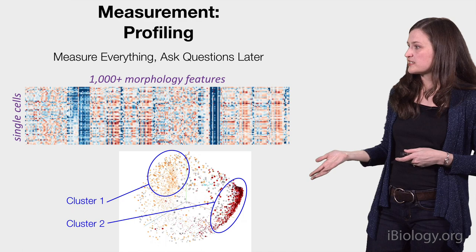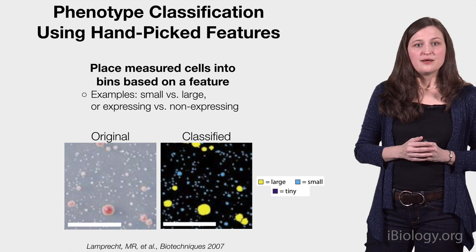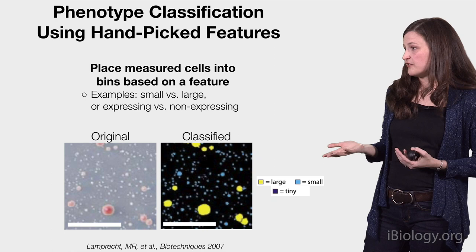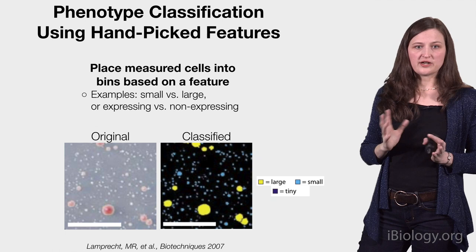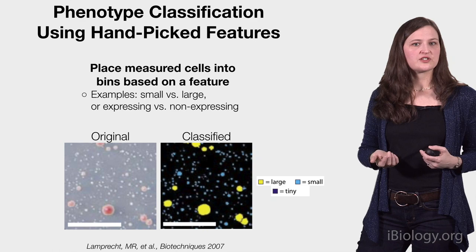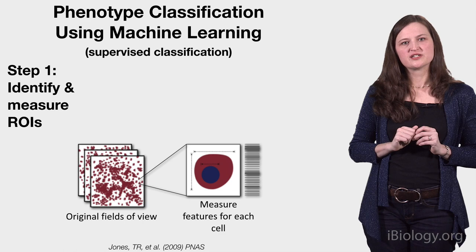You can also cluster single-cell data using morphological metrics to explore your system — for example, to identify cell types or unusual phenotypes. Measuring a lot of cell features can be especially useful for phenotype classification. Based on a single-cell feature such as the size of the nucleus or the intensity of a stain, you can categorize or classify cells or other regions — colonies, as shown here — into bins such as small versus large, or expressing versus non-expressing.